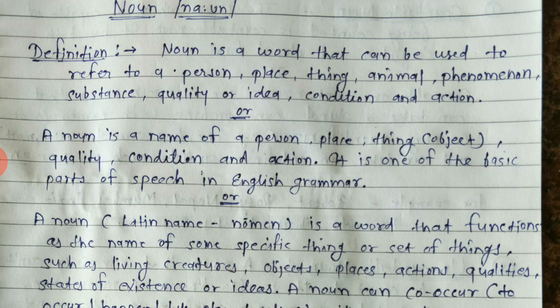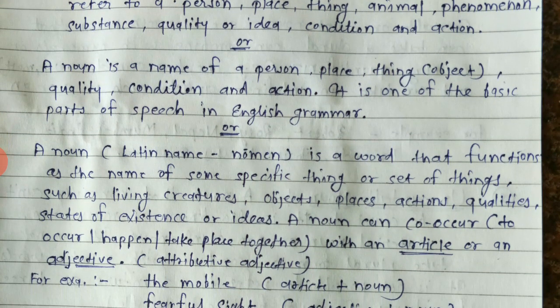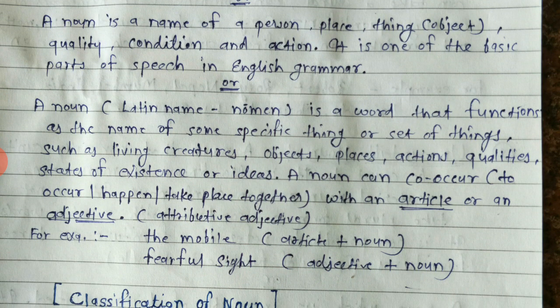Action words can also function as nouns — for example, communication. Verbs like move, operate, motivate, create can be changed into noun form. So, a noun is a name of a person, place, thing, object, quality, condition, and action. It is one of the basic parts of speech in English grammar.